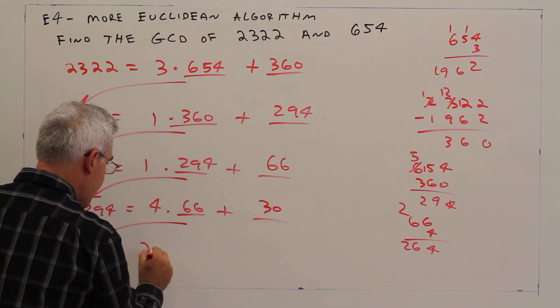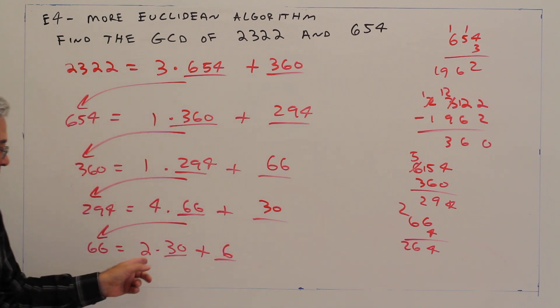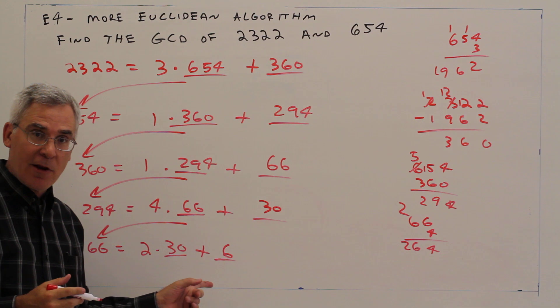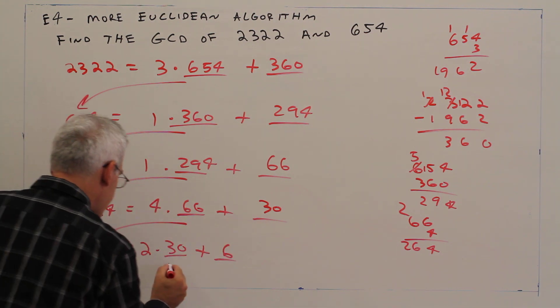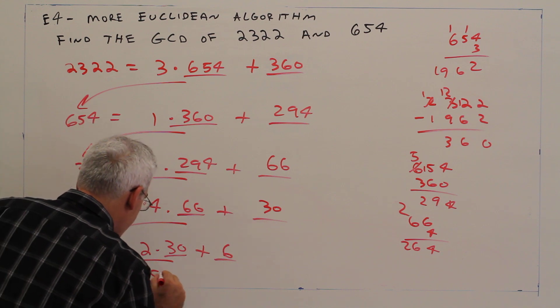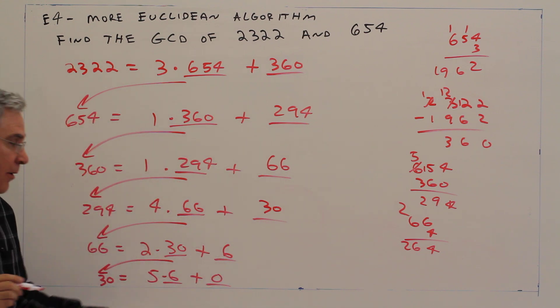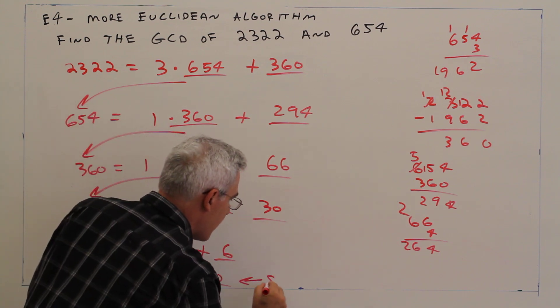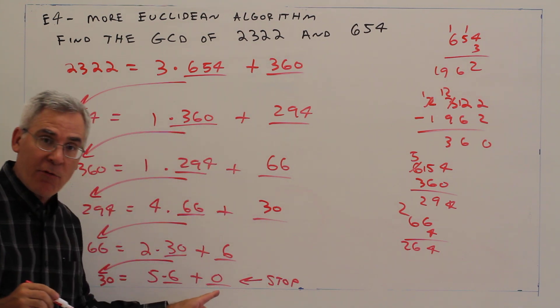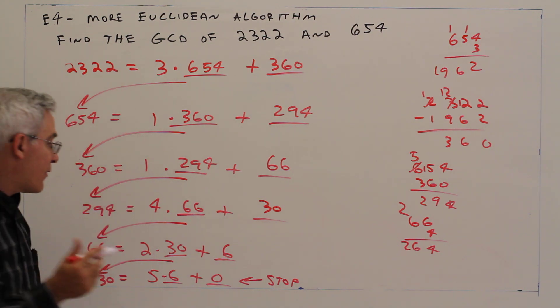66 equals 2 times 30 plus a 6. Oh, I can see we're getting close now. Bring those over. 30 equals 5 times 6 with no remainder. Remember when we get a remainder of 0, we stop. And then the GCD is the remainder just above.